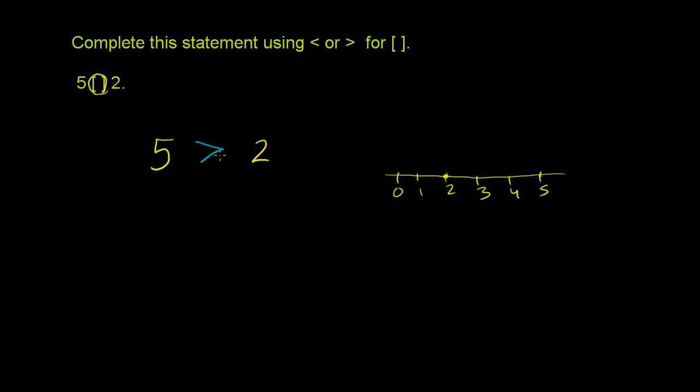So 5 is greater than 2. If it was the other way, we would write 2 is less than 5. Once again, we always have the point pointing to the smaller number, and we have the wide open part, the big part of the symbol, pointing to the larger number.